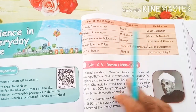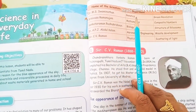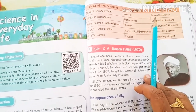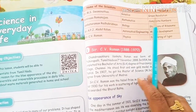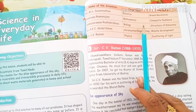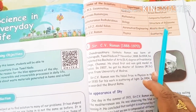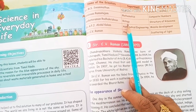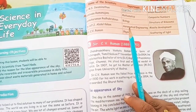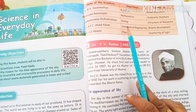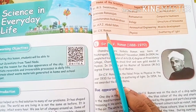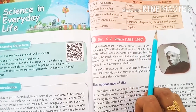Name of the scientist, department, contribution. Dr. M. Swaminathan — department: Genetics, contribution: Green Revolution. Srinivasa Ramanujan — department: Mathematics, contribution: Composite Numbers — he is a mathematical genius. Venkata Raman Radhakrishnan — related to Biology, contribution: Structure of Ribosome. Dr. A.P.J. Abdul Kalam — department: Aeronautical Engineering, contribution: Missile Development. Sir C.V. Raman — department: Physics, contribution: Scattering of Light.